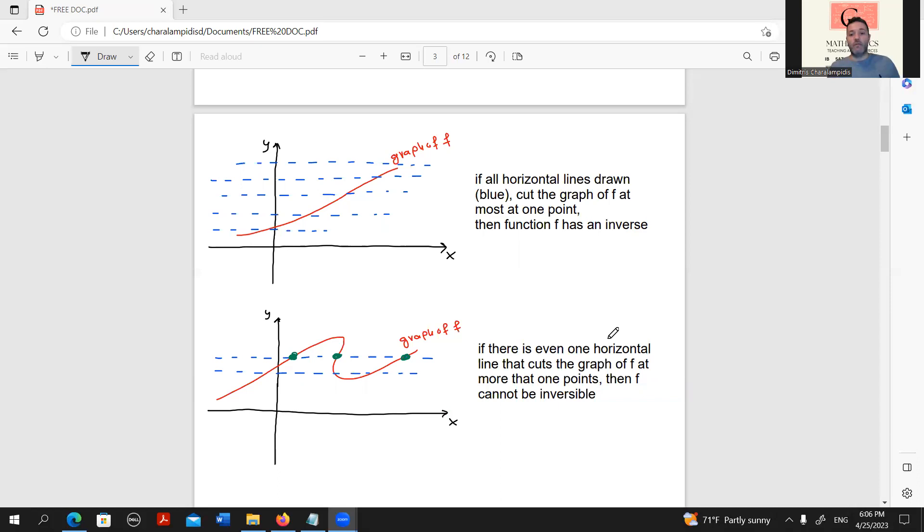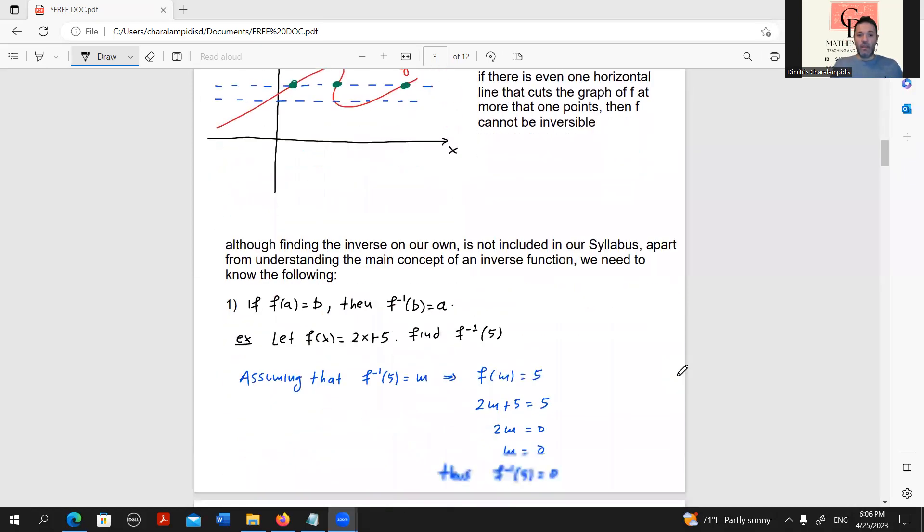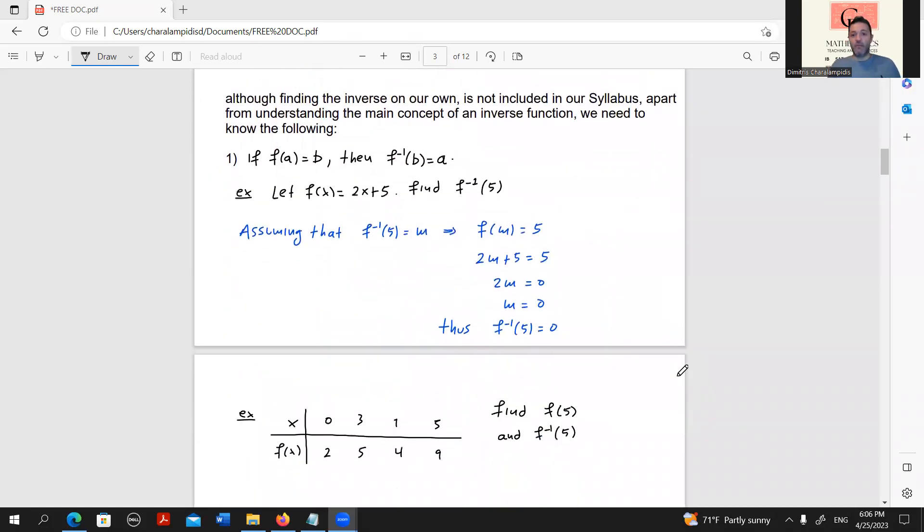On the contrary, if there is even one horizontal line that cuts the graph at more than one point, then it cannot have an inverse. Before ending this video, let us remember two things. Although finding the inverse on our own is not included in our syllabus, apart from understanding the main concept we just saw, we need to know the following.